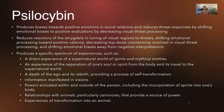Psilocybin reduces reactions of the amygdala — which is very activated in trauma responses — in tuning of visual regions to threats, shifting emotional processing toward a positive balance, decreasing top-down connectivity from the prefrontal cortex to the limbic system. There are regions of the brain called the default mode network that are mutually affected — instead of having the prefrontal cortex fully in control of the limbic system, it's more balanced. This is involved in visual threat processing and shifting emotional biases away from negative interpretations.